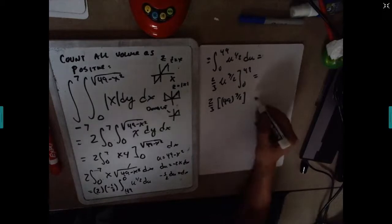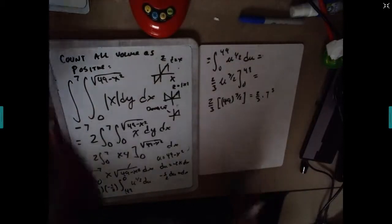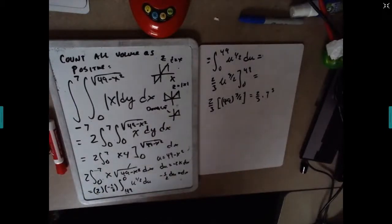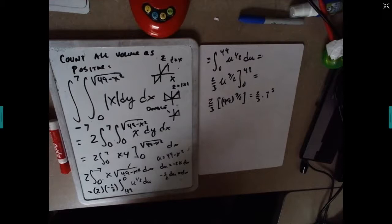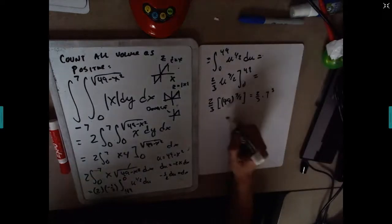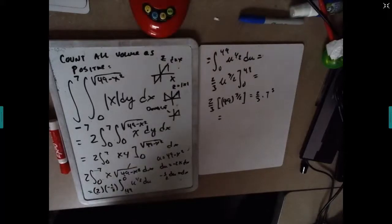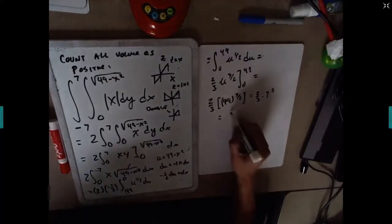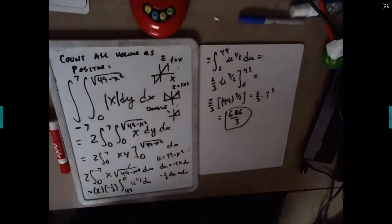And then we end up getting 49 to the three halves minus zero. Well, that's two thirds times seven cubed. And I get lazy with my calculator. Seven raised to the third - so that works out to be 343 times two equals 686.